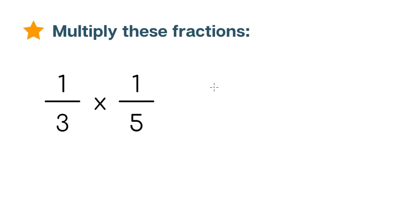Say we want to multiply these two fractions, 1 over 3 and 1 over 5. We are going to take the numerators and multiply them. So 1 times 1 equals 1, and this is going to be the numerator of our answer.